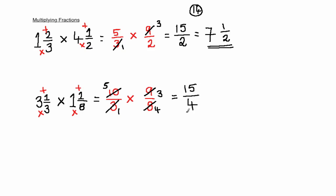Once again, this is an acceptable answer, however if you'd like to write it in its simplest terms — how many 4's are there in 15? There are 3, which makes up 12. This means that there are 3 left over, so there's still 3 that need to be divided by that 4. So the final answer in this question is 3 and 3 quarters.